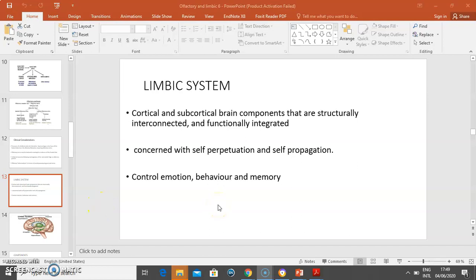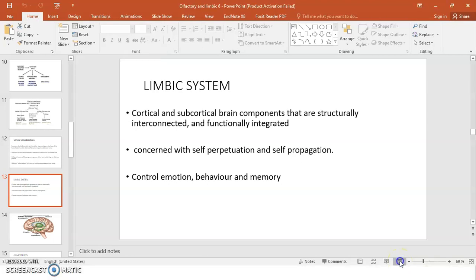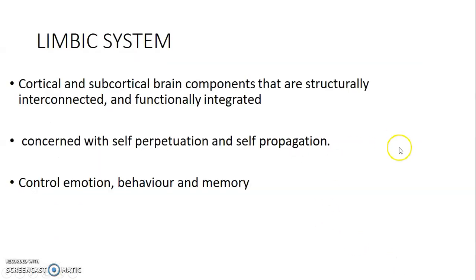Hello students, my name is Dr. Ominde and I'm going to discuss briefly about the limbic system. The limbic system has got cortical and subcortical brain components that are structurally interconnected and functionally integrated. Both cortical and subcortical parts work together and are usually concerned with self-perpetuation and self-propagation. They control emotion, behavior, and memory.